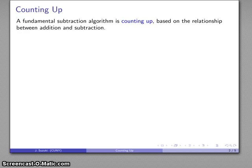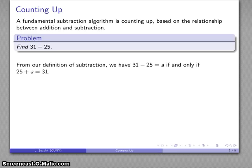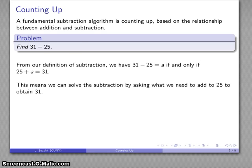Here's a problem that we might consider: 31 minus 25. From our definition of subtraction, 31 minus 25 equals a if and only if 25 plus a equals 31. And what this means is I can solve my subtraction problem by asking, what do I have to add to 25 to get to 31?